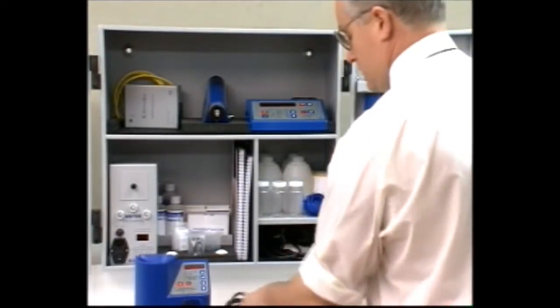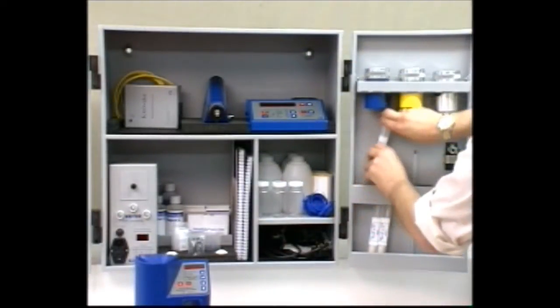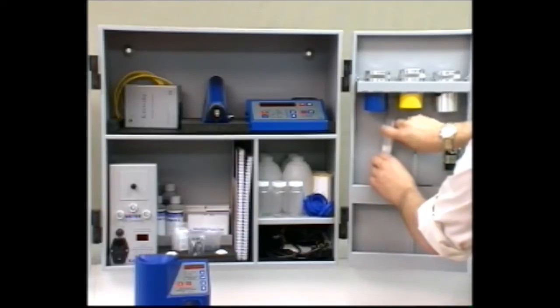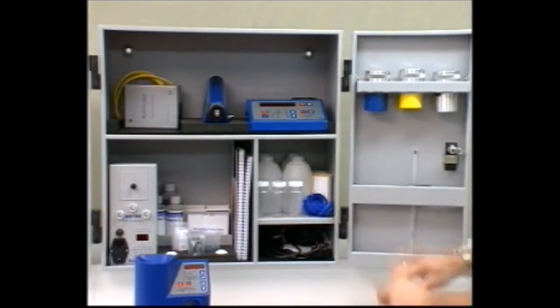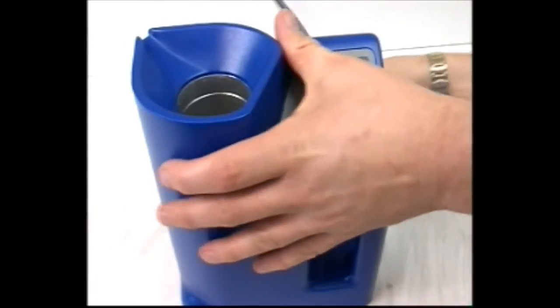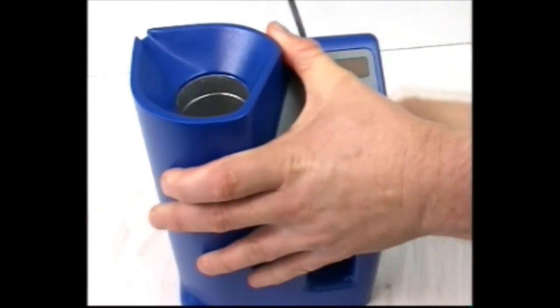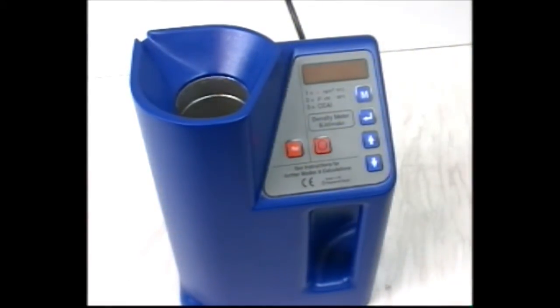This section shows you how to gain a corrected density reading at 15 degrees Celsius. First, fill the density meter tube with oil up to the fill line.